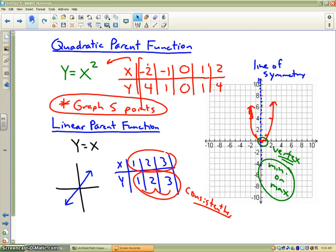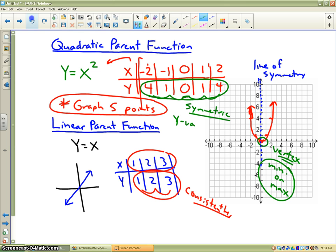If you look at the table values for the parent function y equals x squared for quadratics, you're going to notice the numbers do not change consistently. Actually, they are symmetric. If you notice the number zero is in the middle, and to the right of it I have the numbers 1 and 4, and to the left of it I have the numbers 1 and 4. The y values go down and then back up again, which is why the graph makes a parabola.